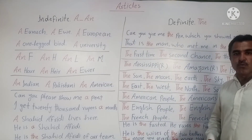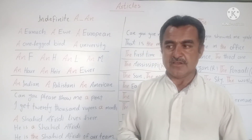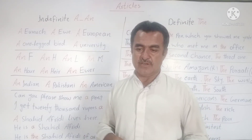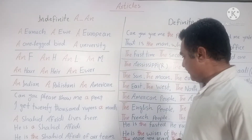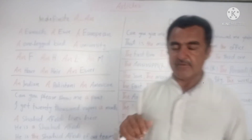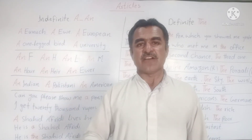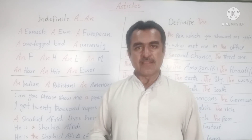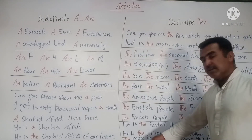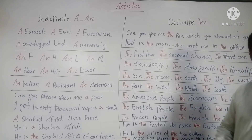We can also use the definite article 'the' with comparative degrees of adjectives and adverbs. For example: 'He is the wiser of the two brothers' — when comparing two persons. And with the comparative degree of adverbs: 'The more you read, the more you learn.'